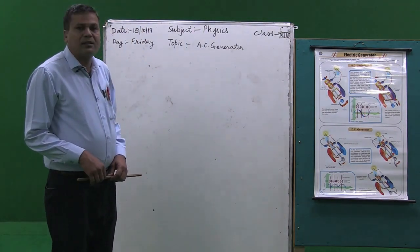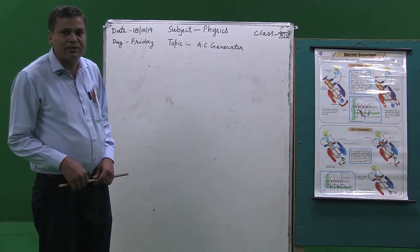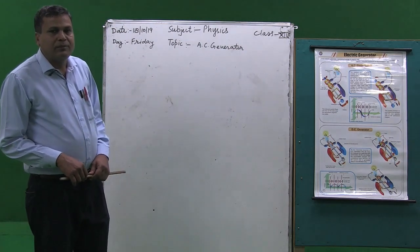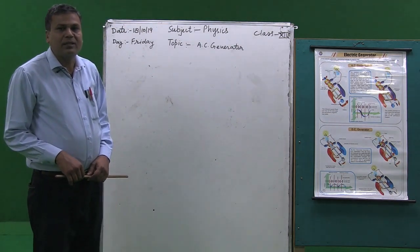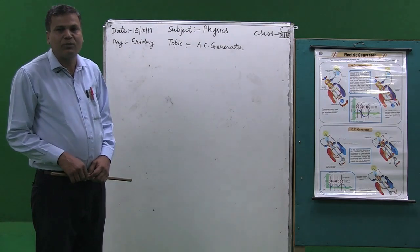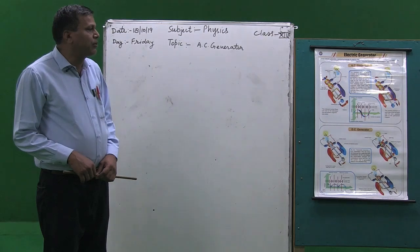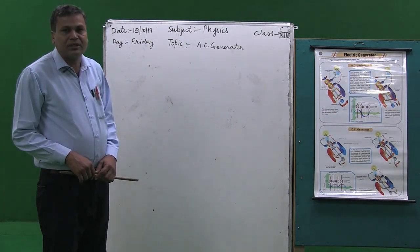The construction of an AC generator is classified into four parts. The first part is the magnet — a strong magnet. There are two poles, north pole and south pole, of a strong magnet situated around the rectangular coil.